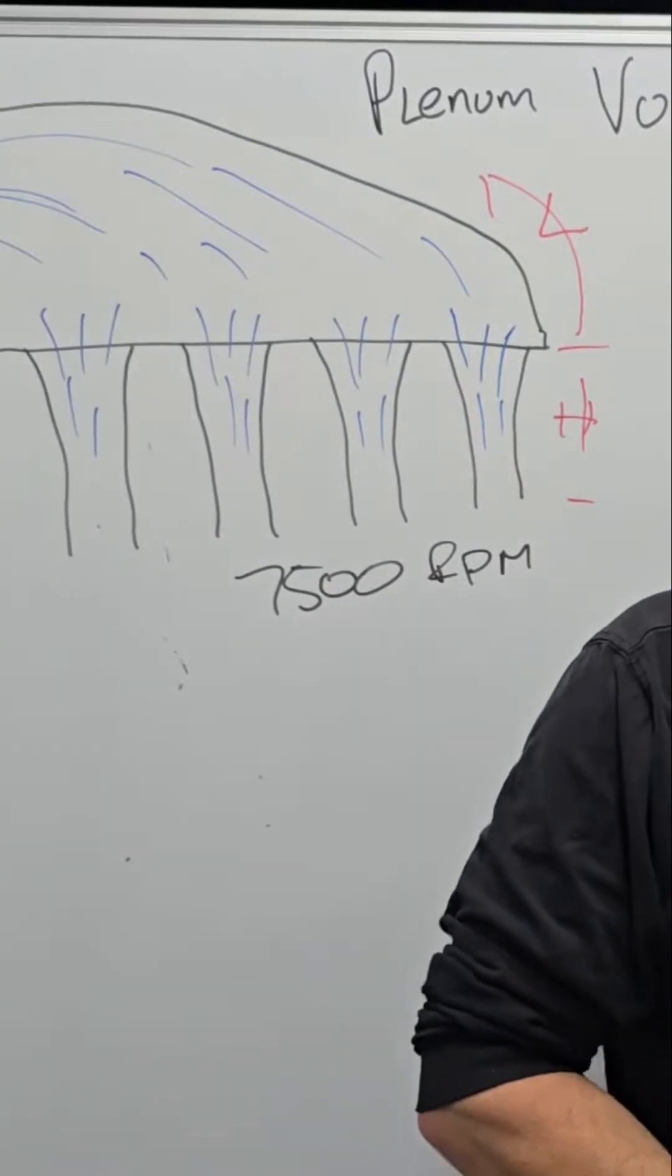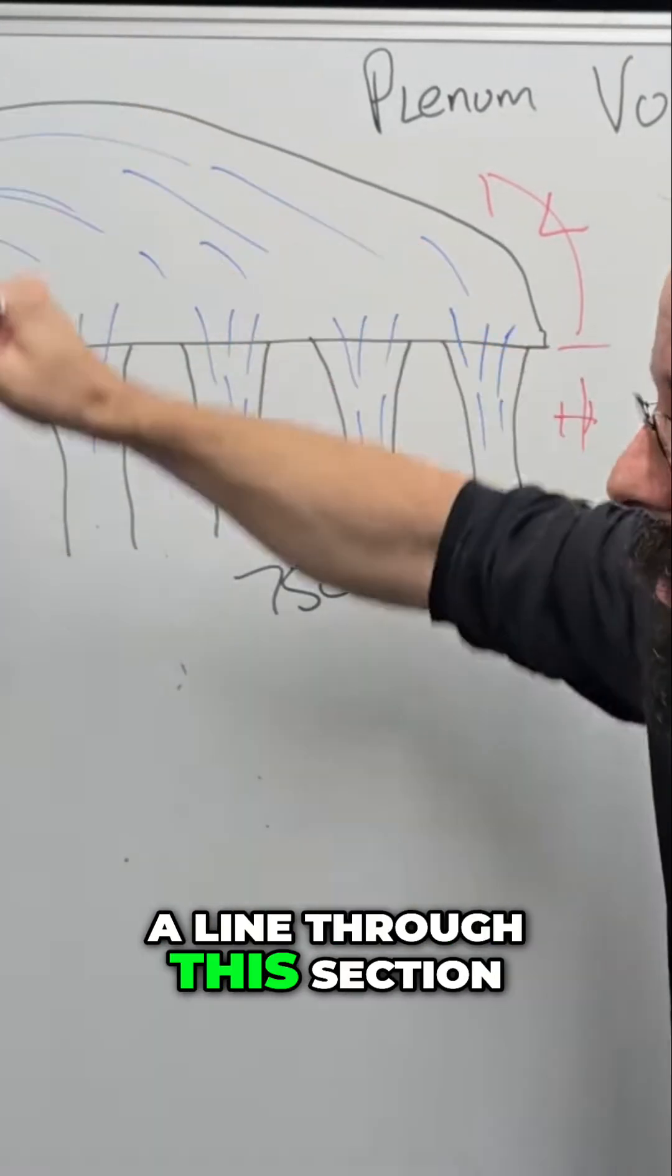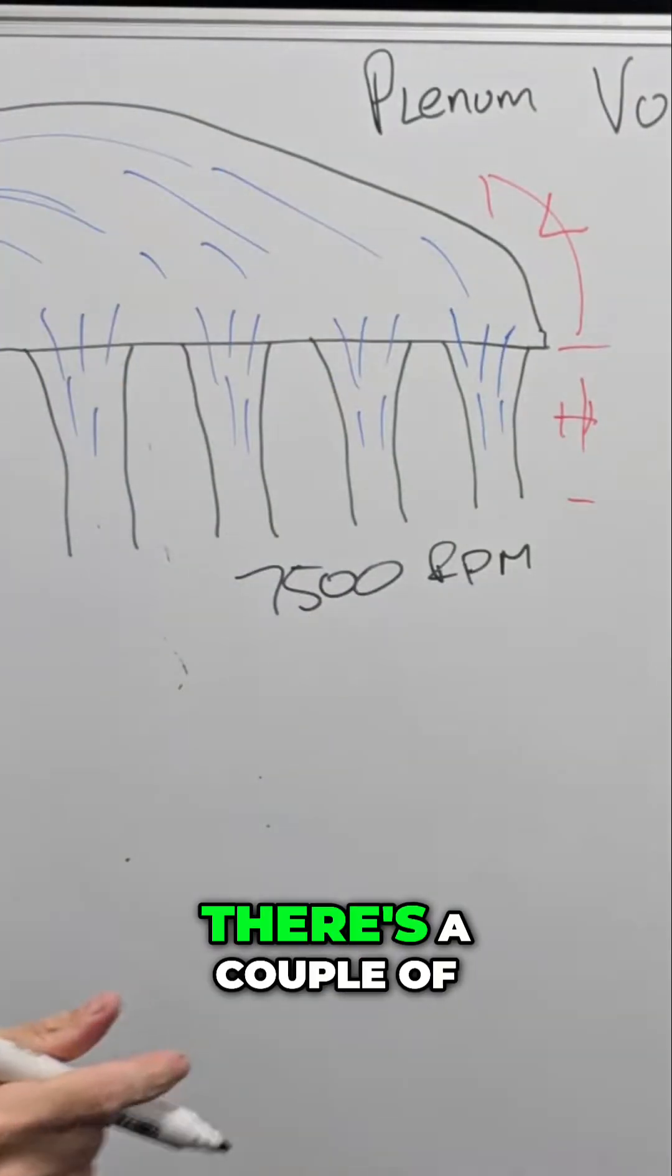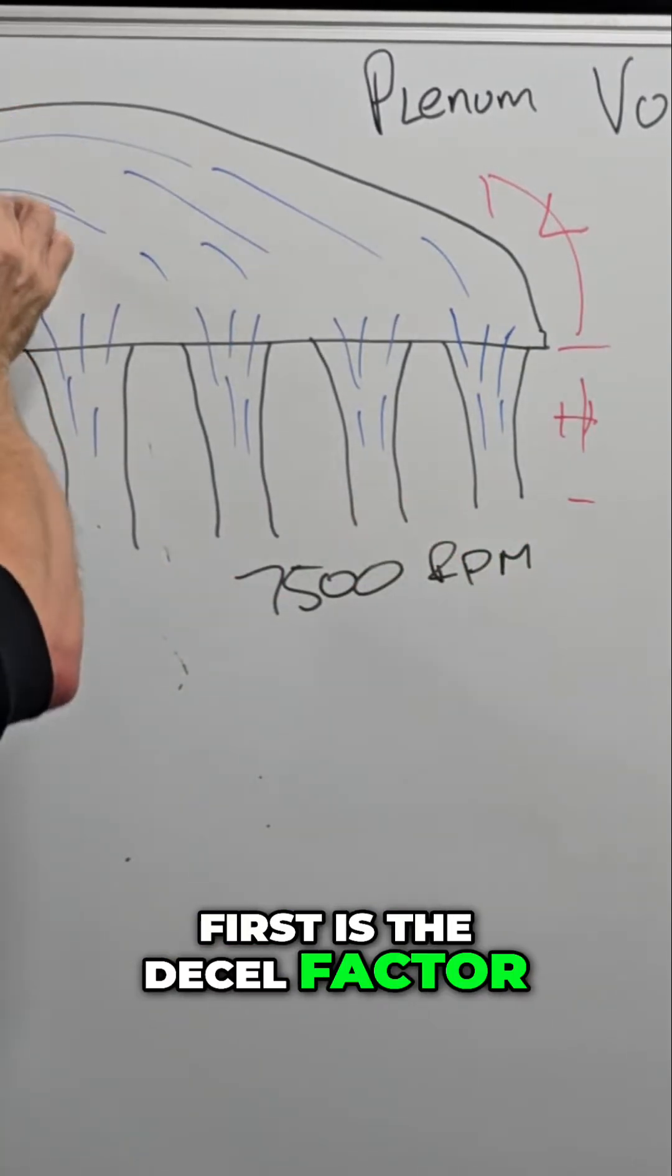So the easiest way I've explained it to many people is if we just draw a line through this section, there's a couple of things we have to control for. First is the D-cell factor.